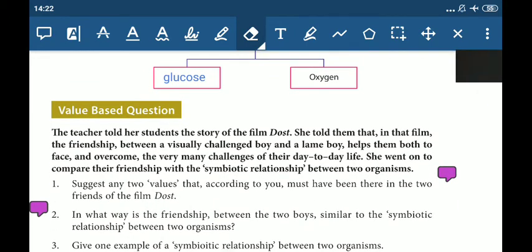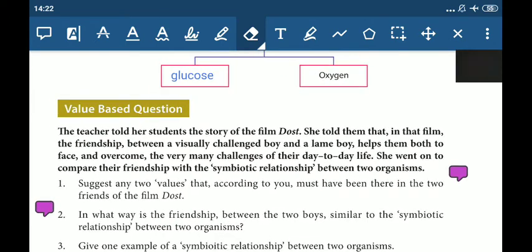Okay, now come to the value-based question. The teacher told her students the story of the film Dost. She told them that in that film, the friendship between a visually challenged boy and a lame boy helps them both to face and overcome the very many challenges of their day-to-day life. She went on to compare their friendship with the symbiotic relationship between two organisms. The question is, number one, suggest any two values that according to you must have been there in the two friends of the film Dost.